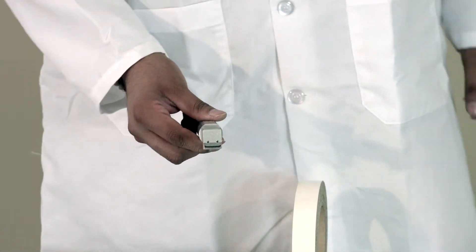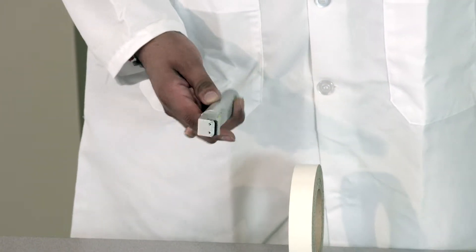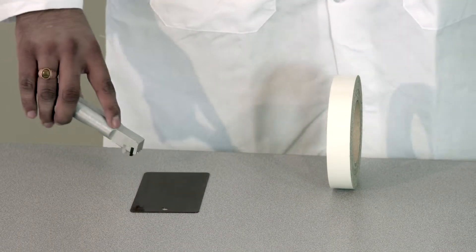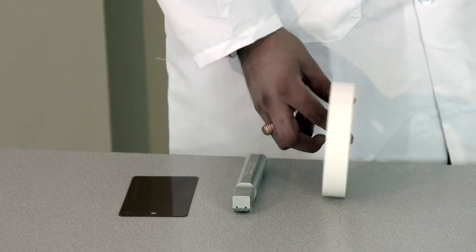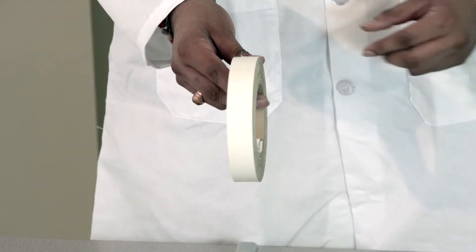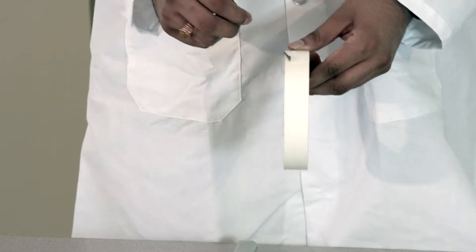In this test, we use a scalpel. Using a scalpel, we make a square on the chip and we use a pressure sensitive tape and put it on the chip. We put pressure on the tape and make sure it's adhering very good with the chip and then you remove it.